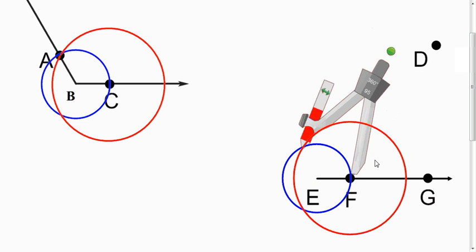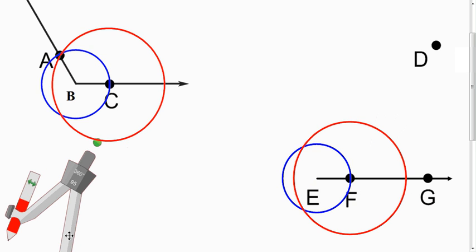And you notice we have two points of intersection. Pick the one so that it looks like the other picture. So I'm going to pick D to be this one up here. It wouldn't be wrong if you picked the other one, it just wouldn't look exactly the same. And then we're going to connect our vertex here, E, to D.